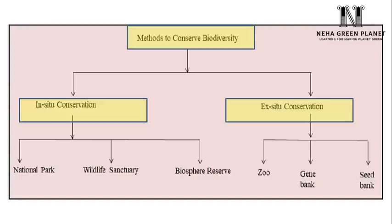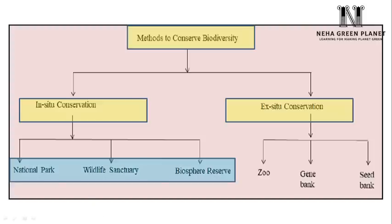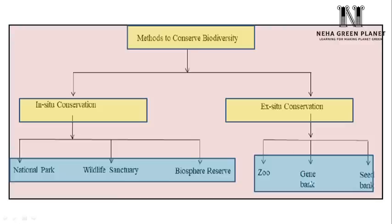In-situ conservation is of the following types: national park, wildlife sanctuary, and biosphere reserve. Ex-situ conservation — that means the method in which we protect plants and animals outside their natural habitat — includes the following main categories: we can protect animals or plants in a zoo, gene bank, or seed bank.